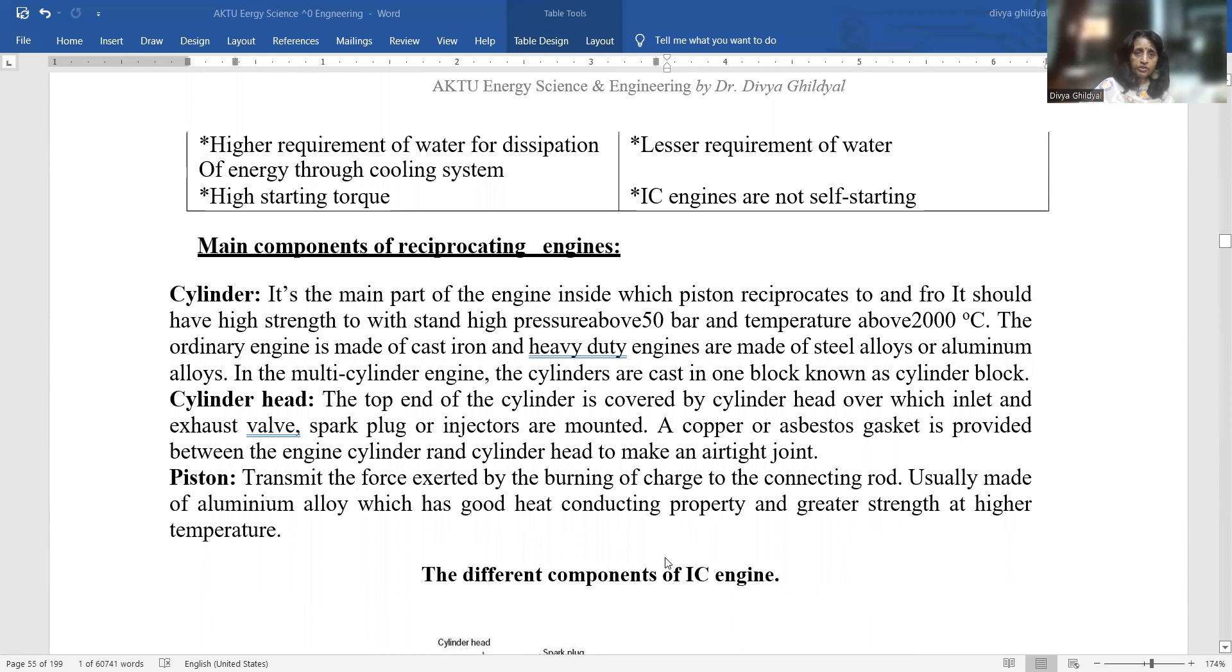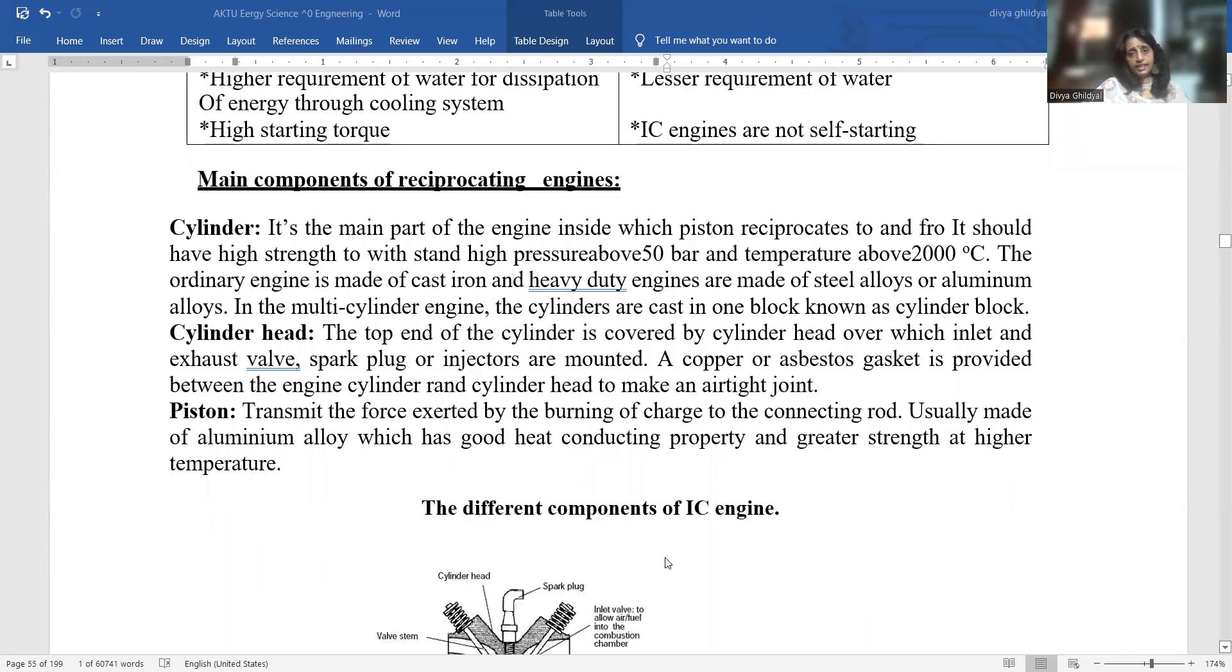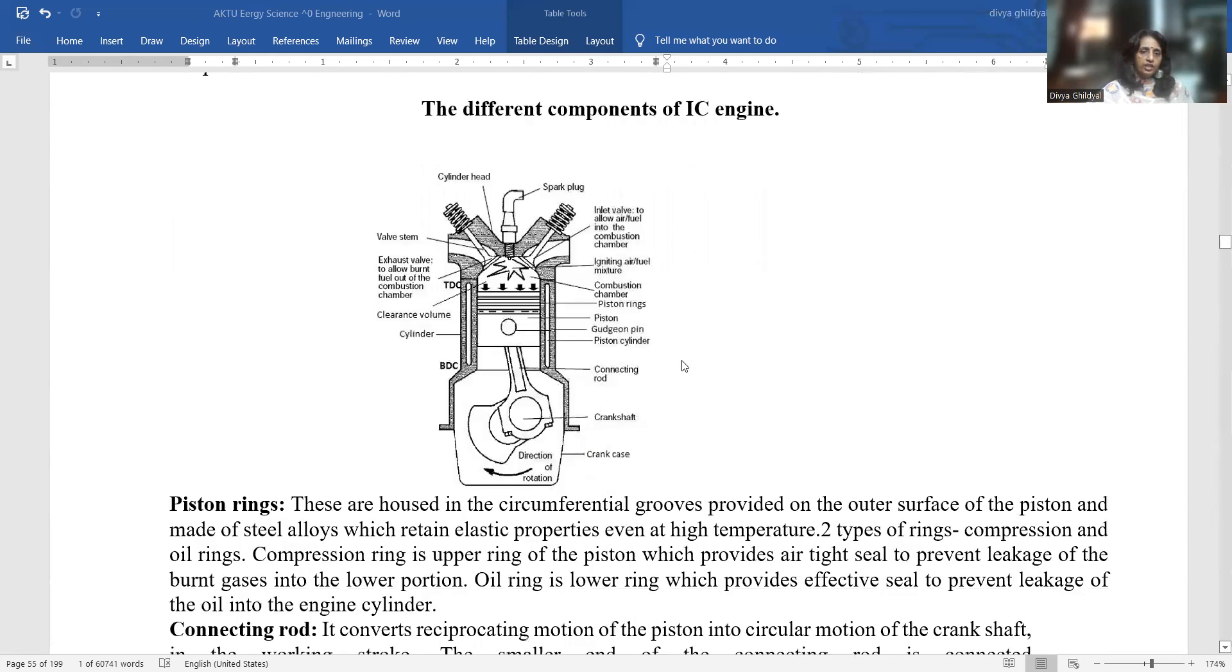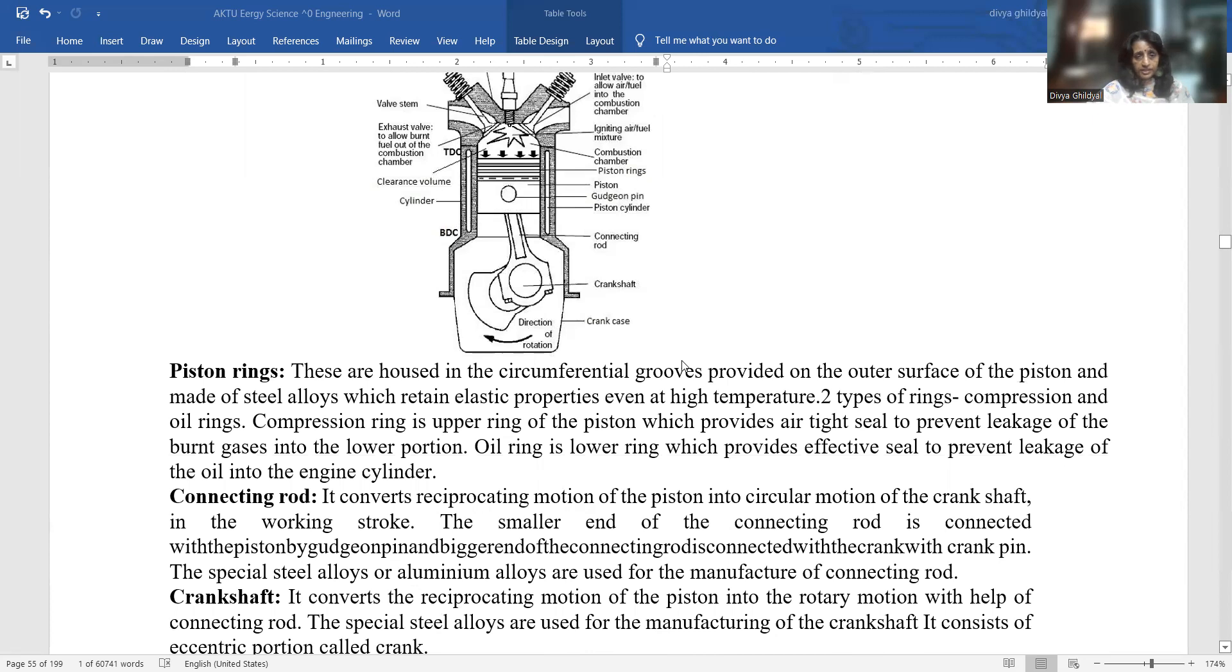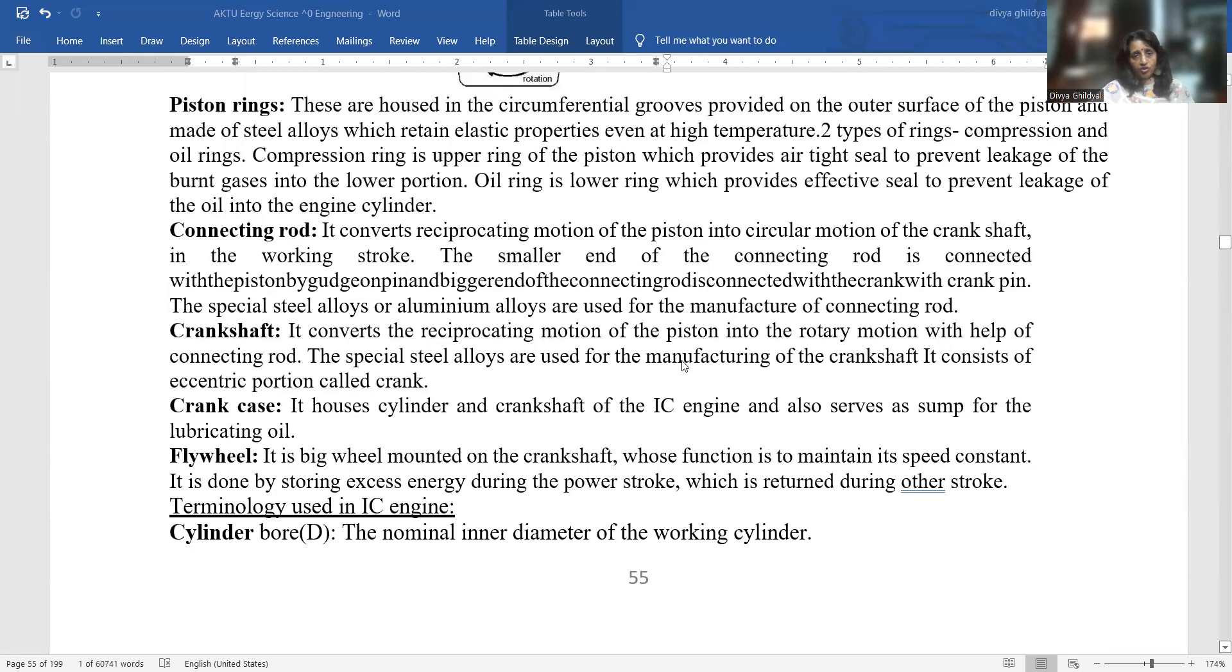Main components of reciprocating engines are: cylinder, which is the main part of an engine and consists of piston; cylinder head, which covers the top end where inlet and exhaust valves, spark plug or injectors are mounted; piston, which transmits the force exerted by the burning charge to the connecting rod; piston rings, connecting rods, crankshaft, crankcase, and flywheel.